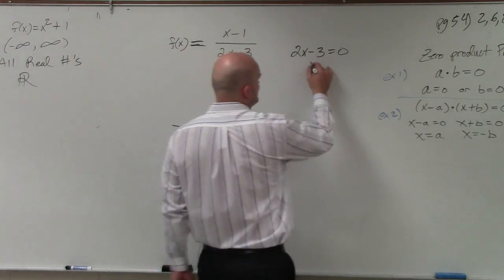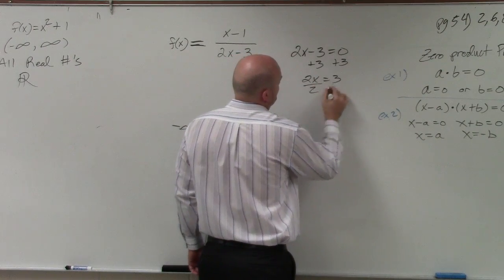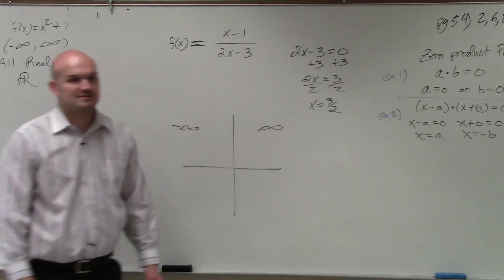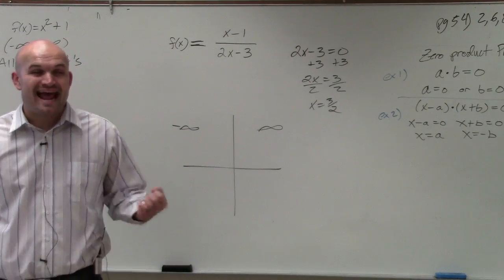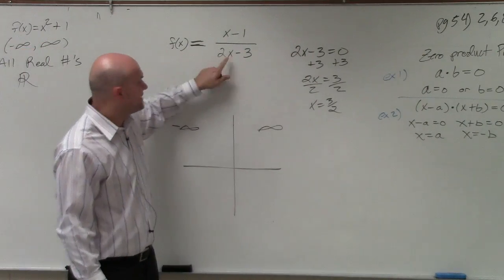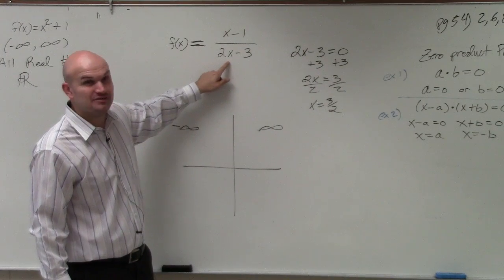Using our inverse operations from algebra, x equals 3 halves. So that means when x is equal to 3 halves, that makes my denominator 0. So guess what? 3 halves is not inside the domain.